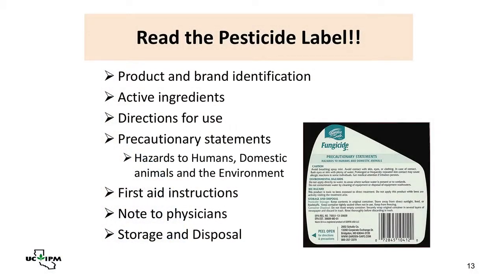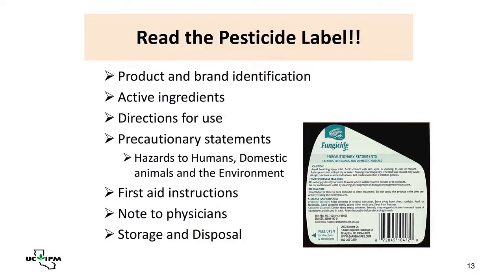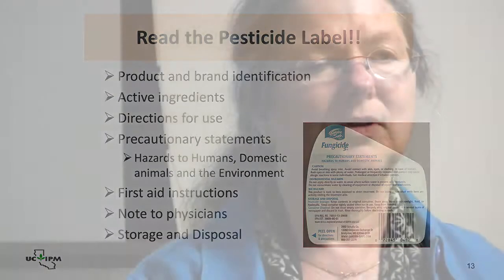The pesticide label is a really important document. It contains information on the brand and product, the active ingredient, directions for use, precautionary statements, first aid instructions, and a note to physicians. If someone gets poisoned or swallows a pesticide, bring the product label or container to the doctor's office so the doctor knows what they're dealing with. You may need your hand lens, because the active ingredient is printed in very small type.